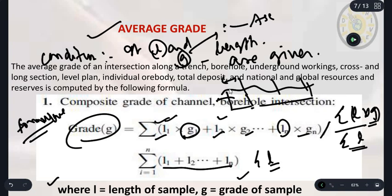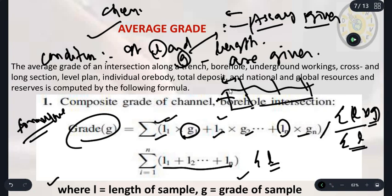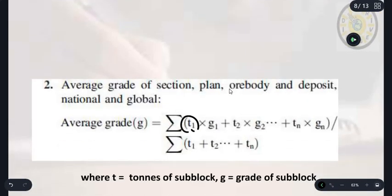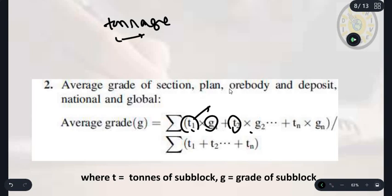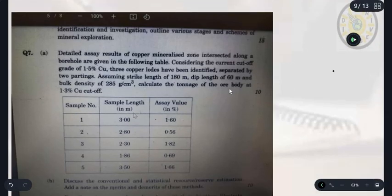If assay is also given - last video we discussed assay is not equal to grade but we assume that assay is same as the grade. Assay is the chemical analysis. If the tonnage is given, then it's tonnage T1 times grade G1 plus T2 times G2 plus Tn times Gn upon summation of the tonnage. T is the tons of the subblocks and g is the grade of subblocks.